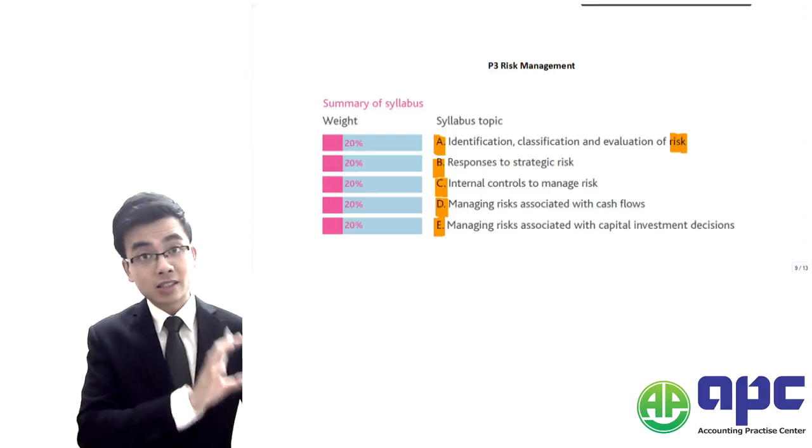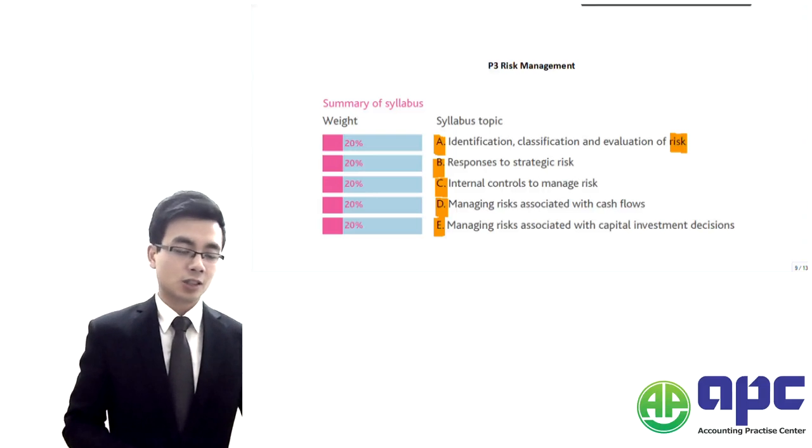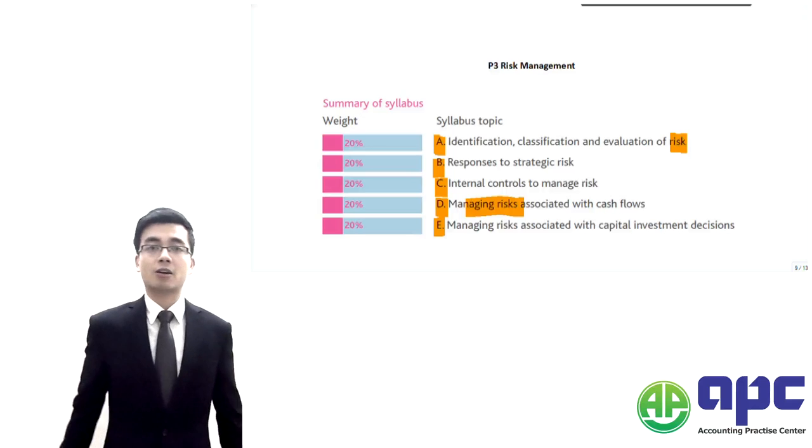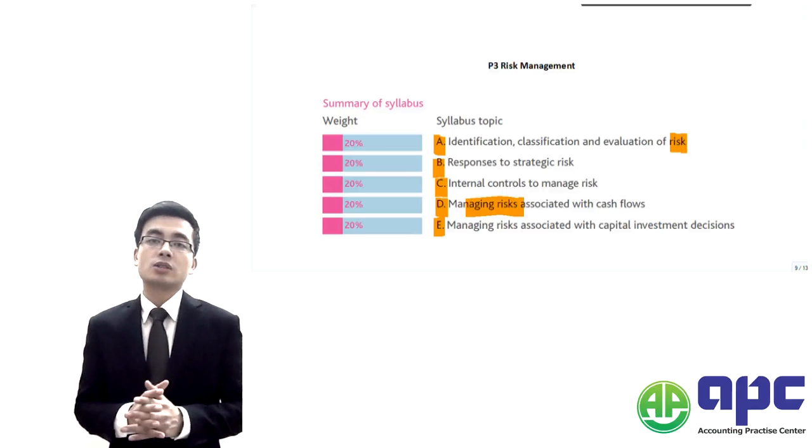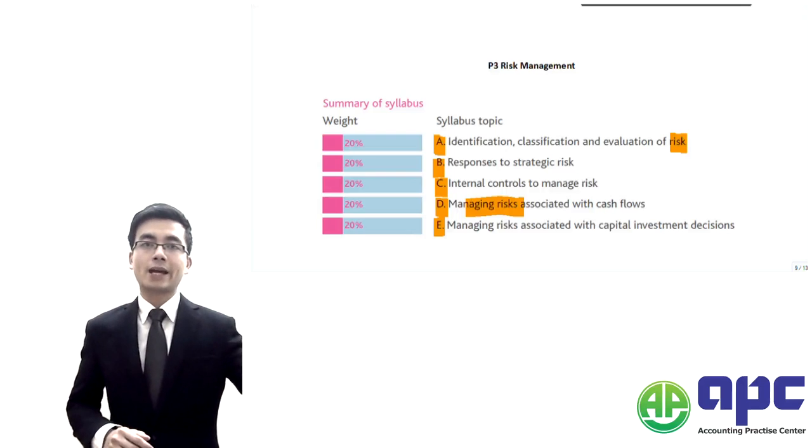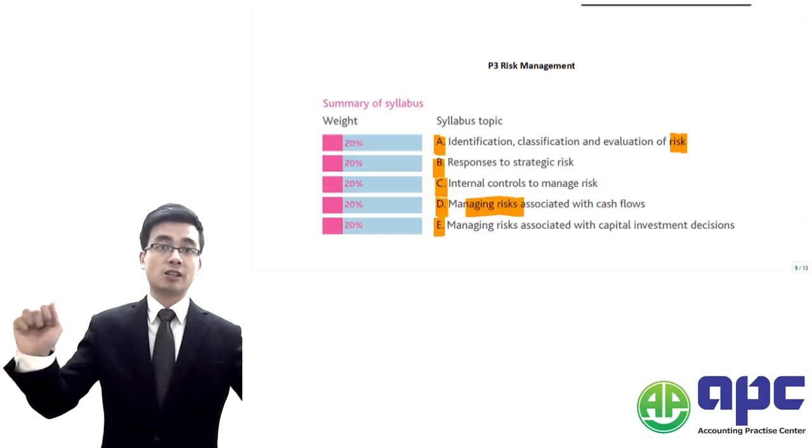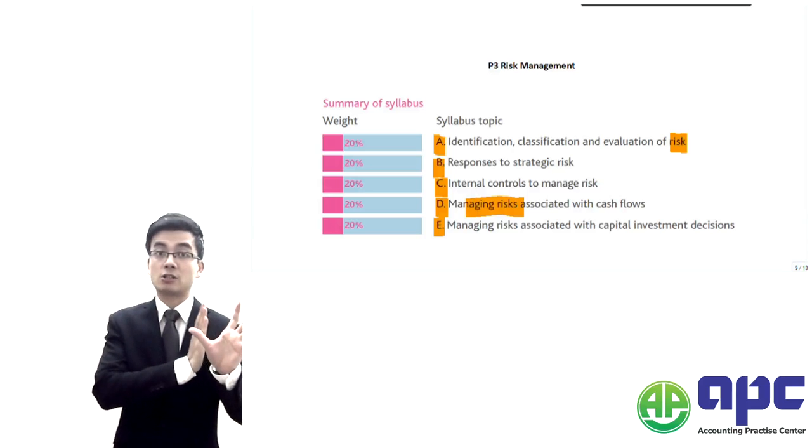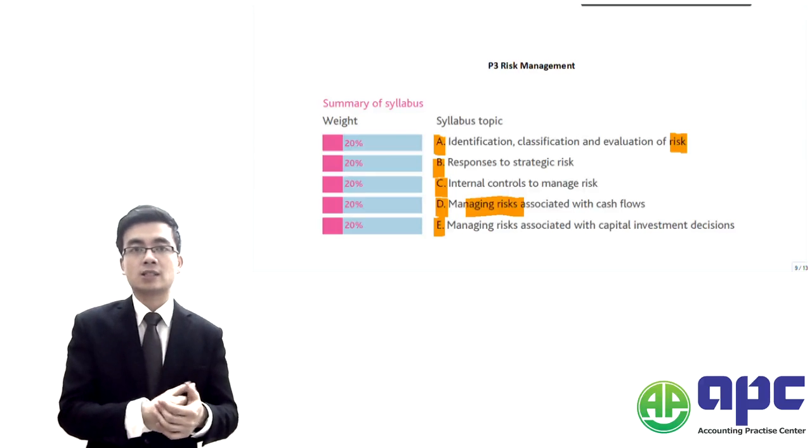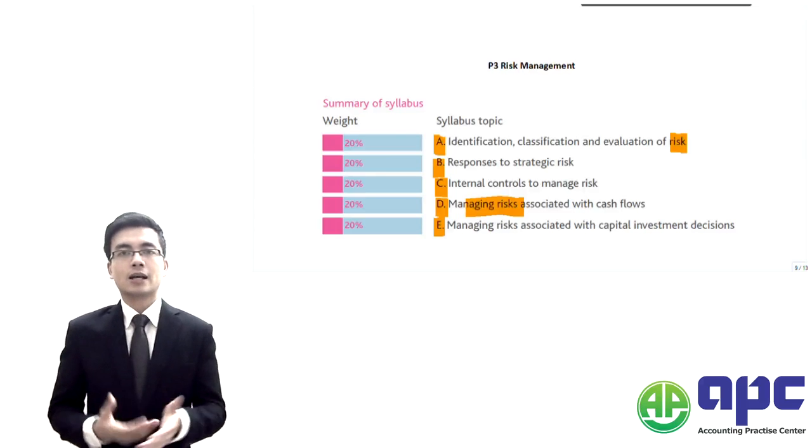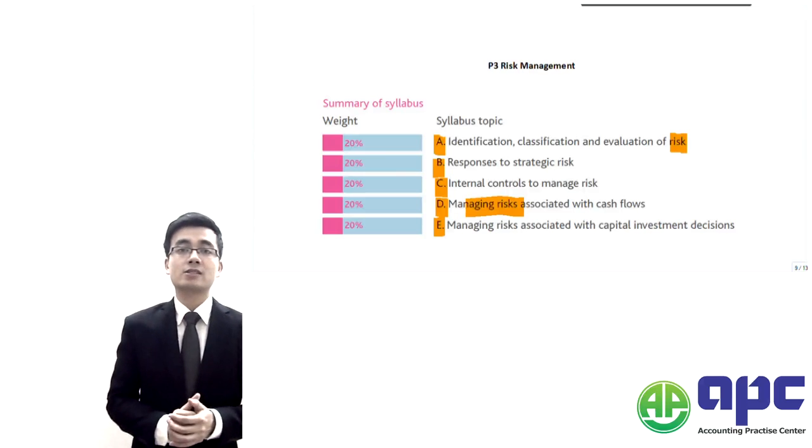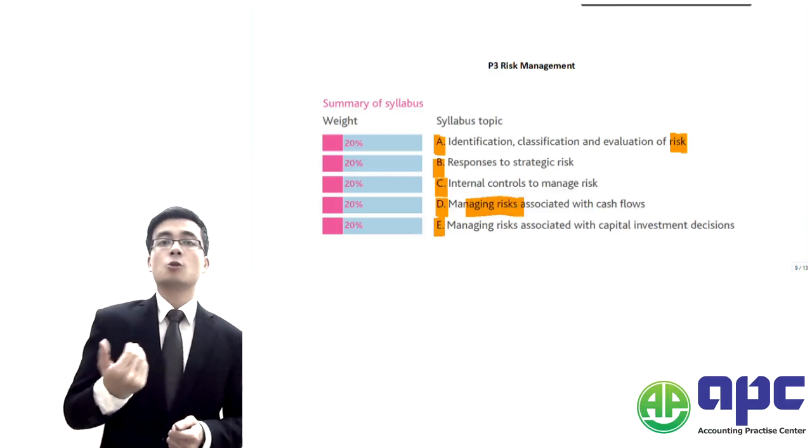Section D accounts for 20% of the marks. It's related to the technical bits of our study, where we're going to manage the risks doing calculations. Most importantly, we are focusing on the foreign exchange rate risk as well as the interest rate risk management. For the foreign exchange rate risk, it's the changes in the exchange rate if we're going to operate overseas, and that will impact our cash flows.